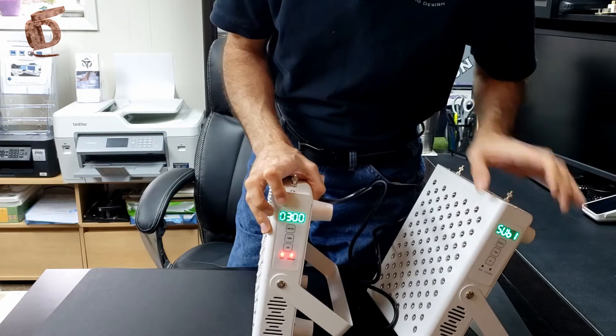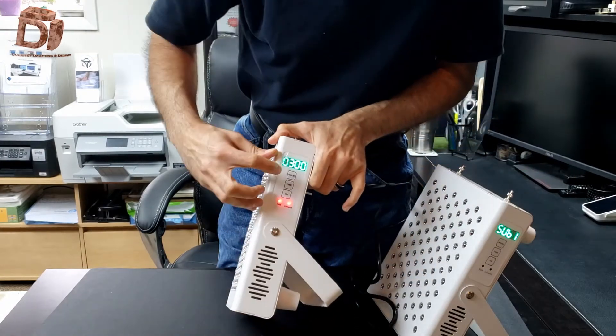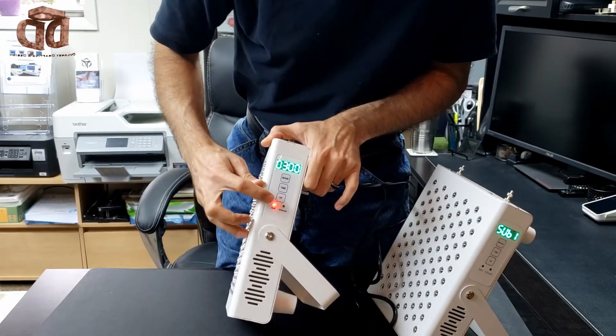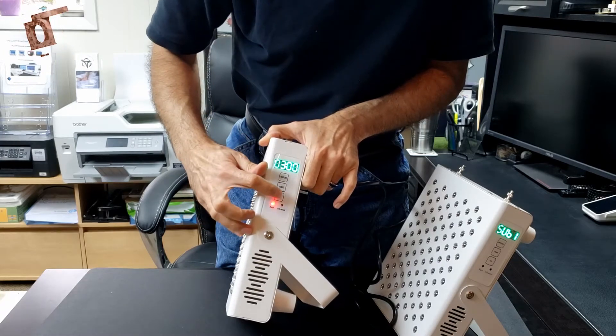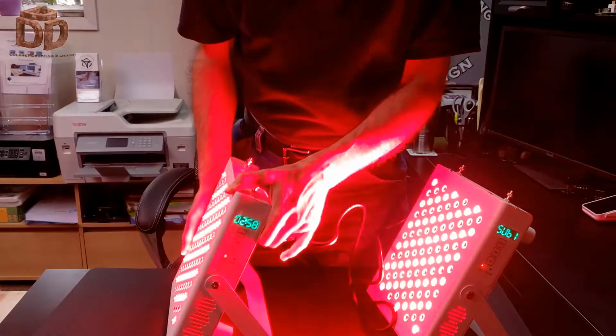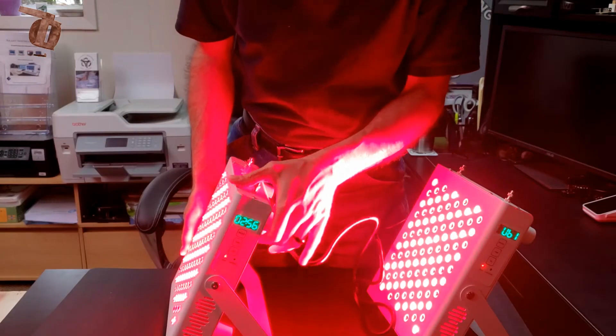When I go to turn on here I'm going to hit mode and this is in red light mode. When I hit OK you see the red lights come on both panels.